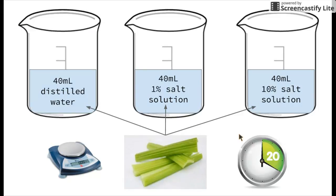You'll set up four beakers with 40 mL of solutions: distilled water, 1% salt solution, and 10% salt solution. You will weigh the celery pieces first, place a piece into each beaker, and leave them for 20 minutes. Once the time is up, take the pieces of celery out and re-weigh them. You should see differences in the percentage weight change between the three pieces of celery, depending on the type of solution they were placed into.